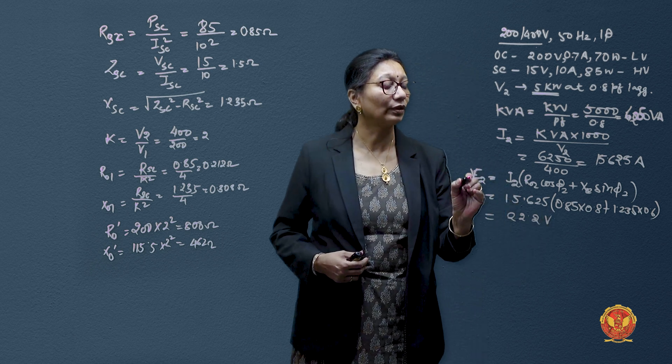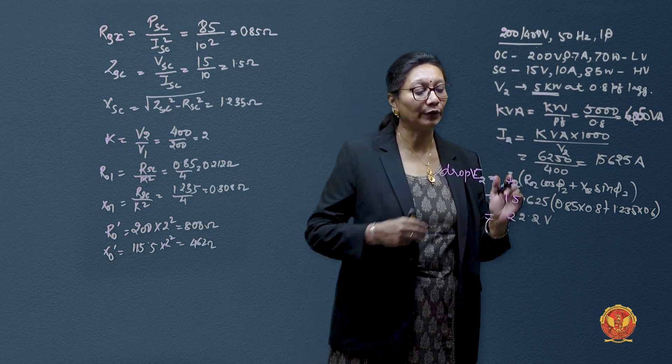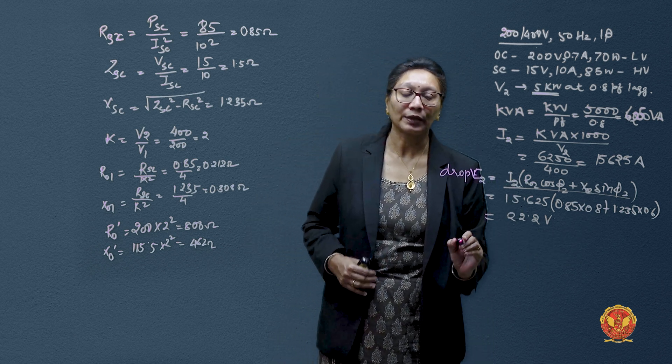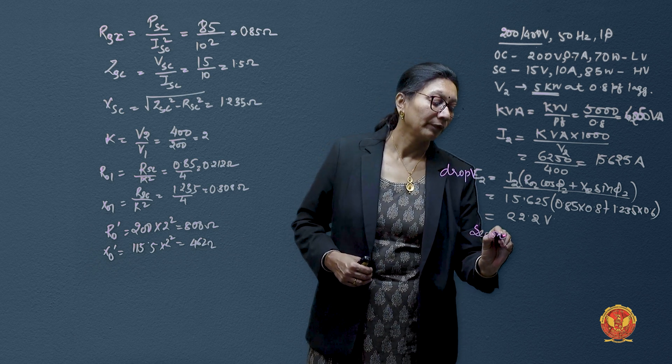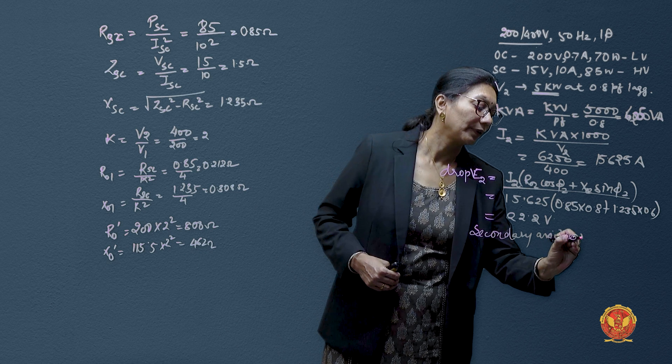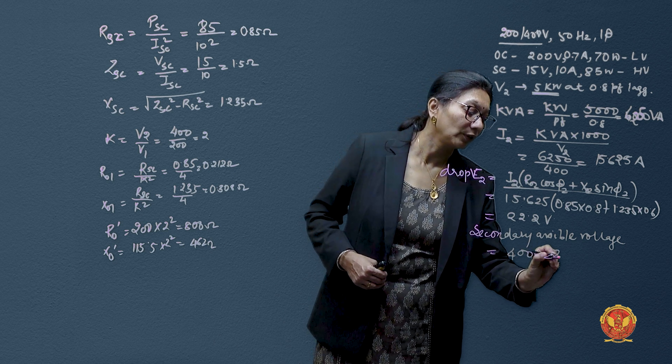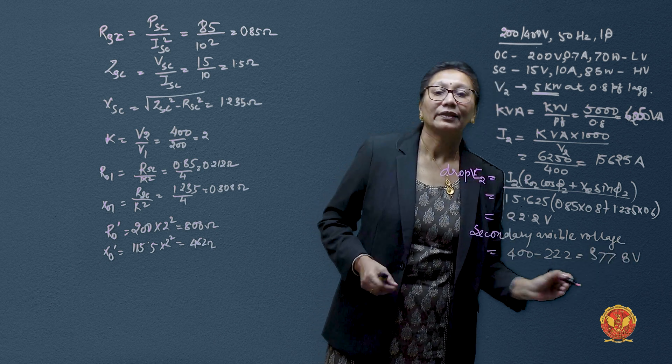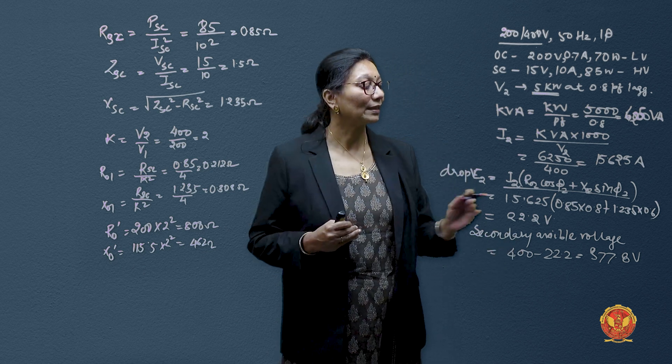So this is actually the difference between drop, difference between e2 and V2. So this drop will show us how the secondary voltage which was 400 has now dropped to secondary side available voltage of 400 minus 22.2, which gives 377.8 volts.